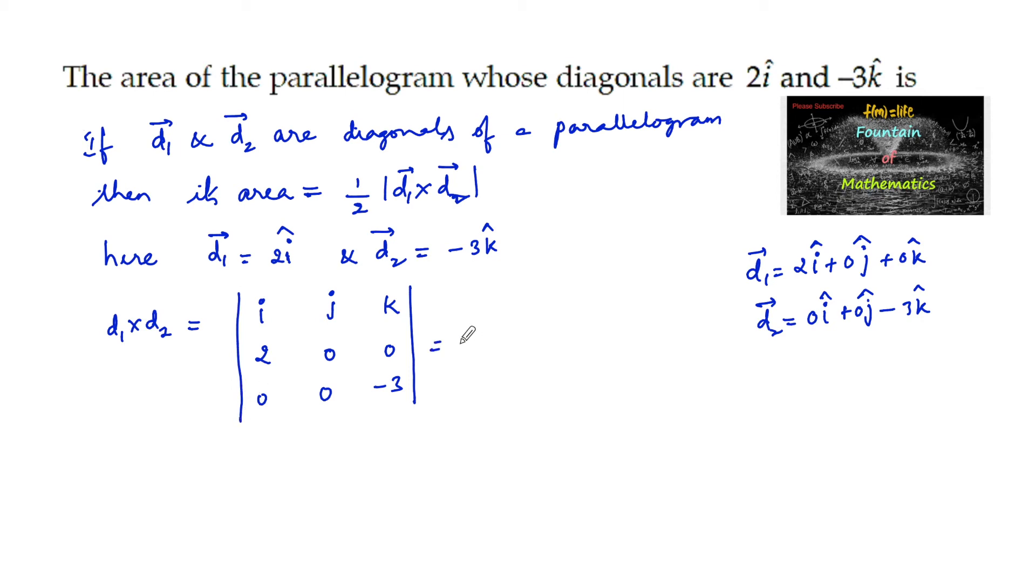The determinant is i times 0 minus j times -6 plus k times 0, which gives 6j cap. So d1 cross d2 is 6j cap.